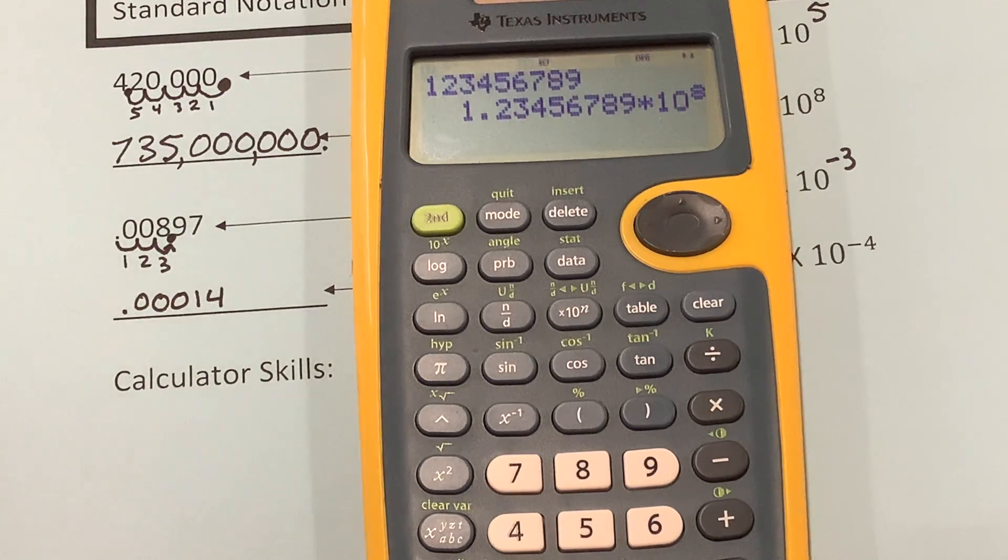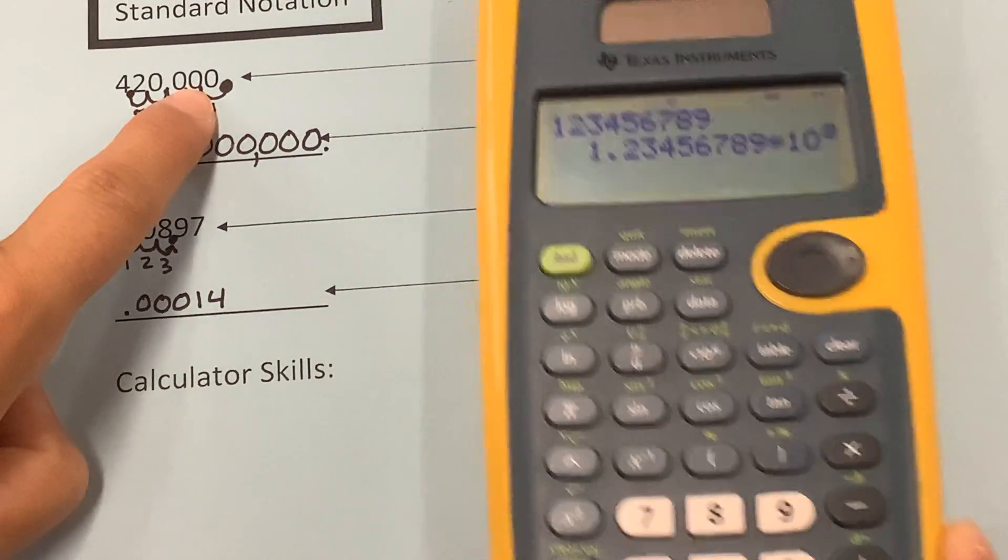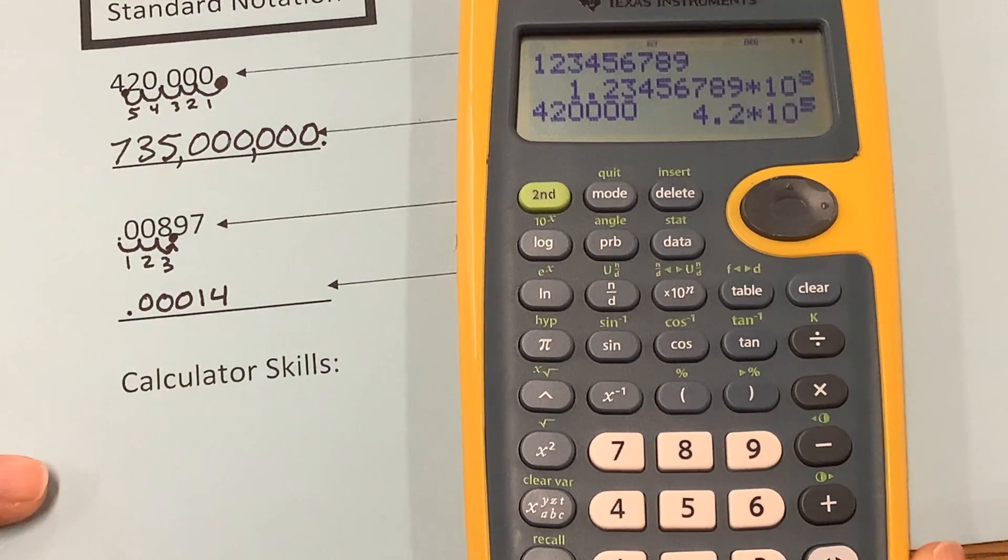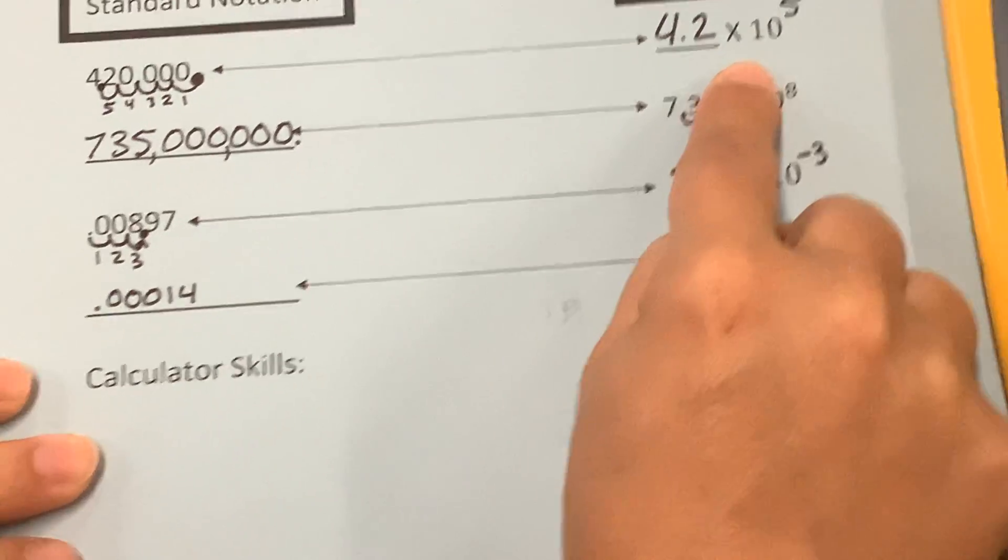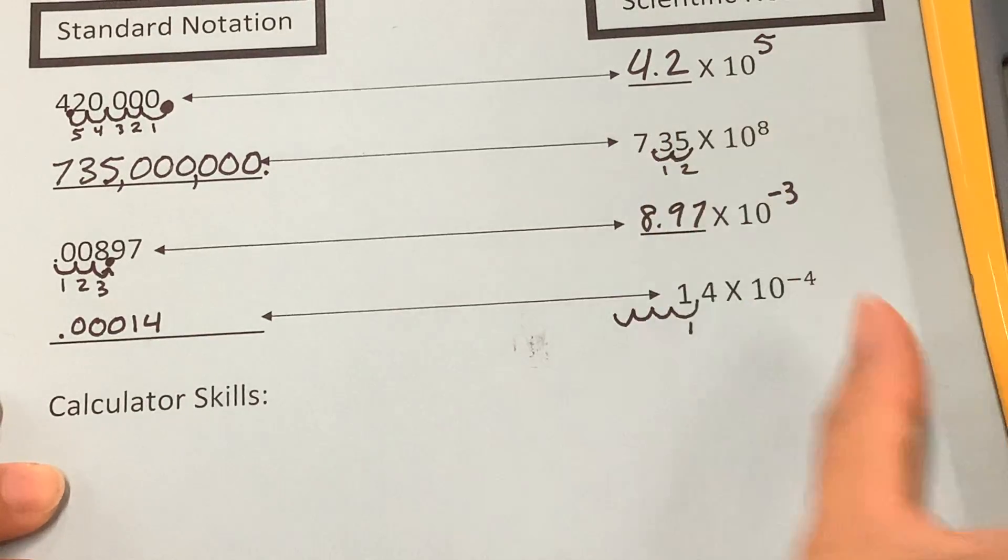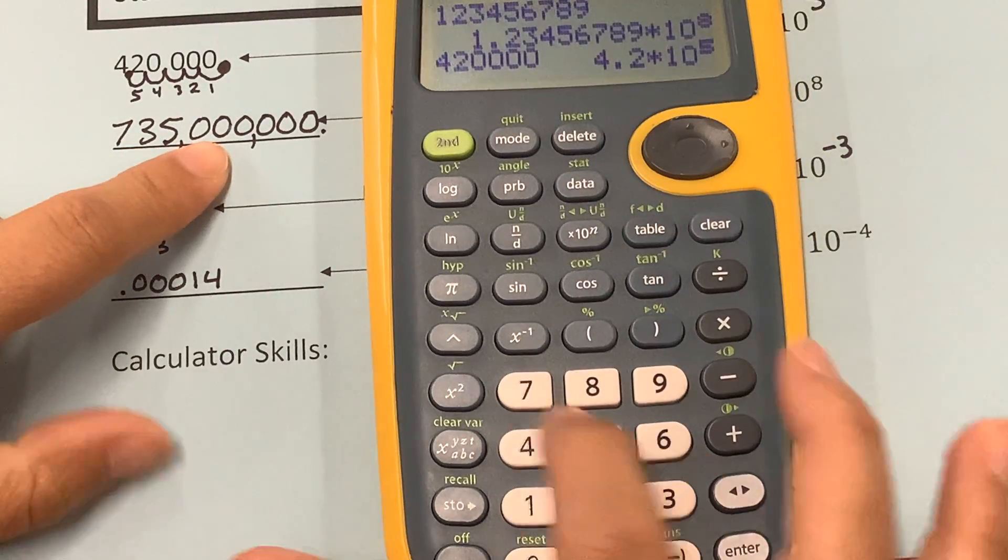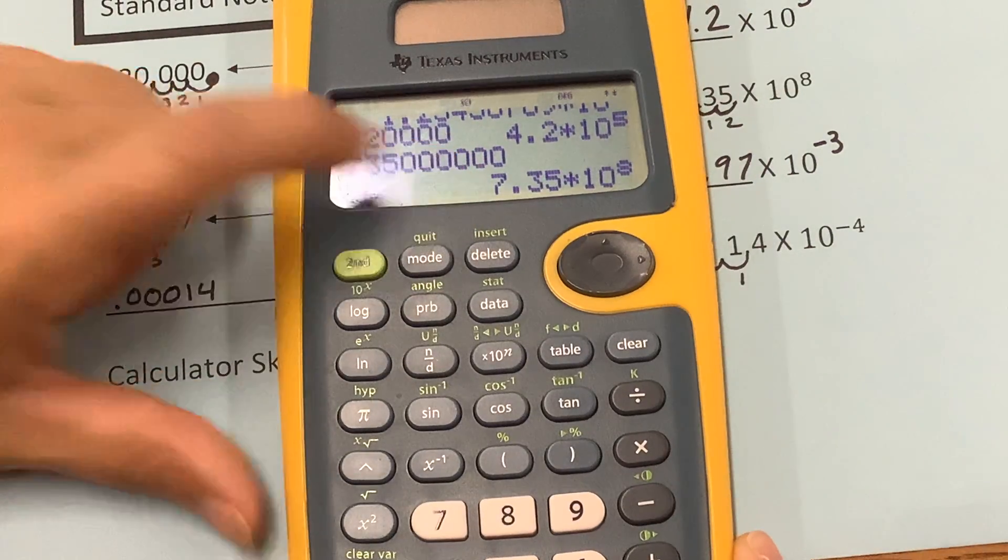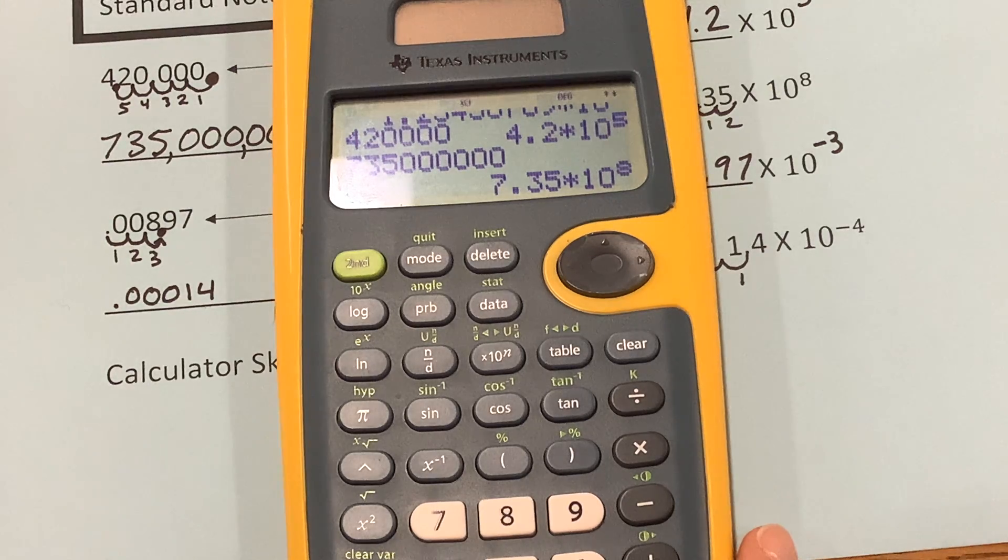Okay? So that's one way that you can check. So like put in 420,000 here. And press enter. 4.2 times 10 to the 5th. So that's what we have here. If you want to put in 735 million, it gives us 7.35 times 10 to the 8th. So it will help us out some.